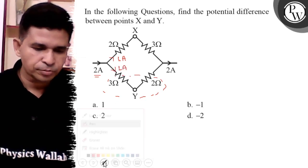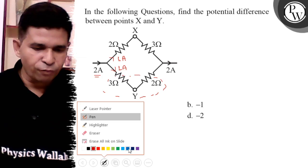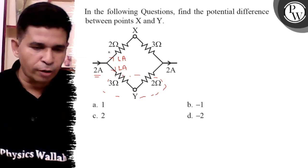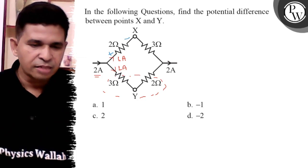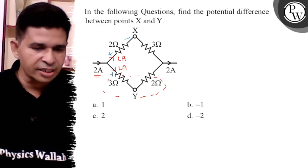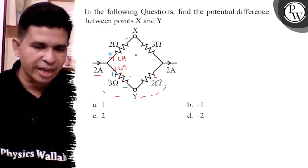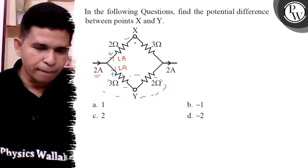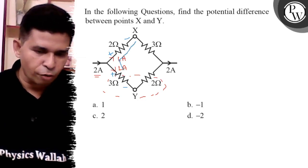Now current always flows from higher potential to lower potential, so it is the plus, it is the minus. Similarly, it is plus and it is minus. By applying Kirchhoff's Voltage Law from X to Y using that path.